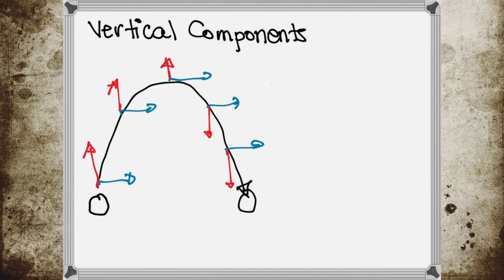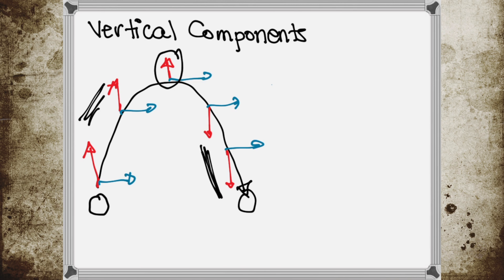For your vertically launched projectile: your vertical velocity decreases on the way upward. At the point where it reaches its maximum, there will be no vertical velocity at the top of the trajectory. As it goes down, your vertical velocity increases on the way downward.